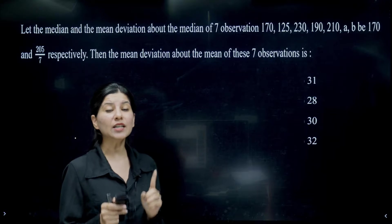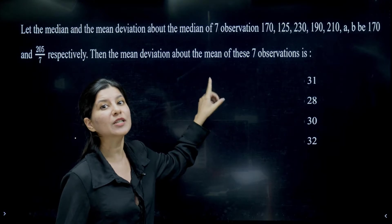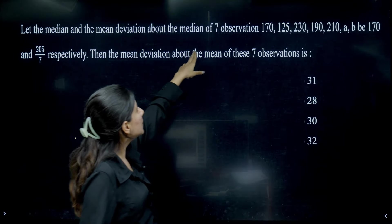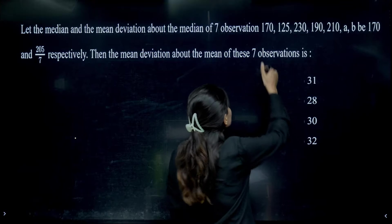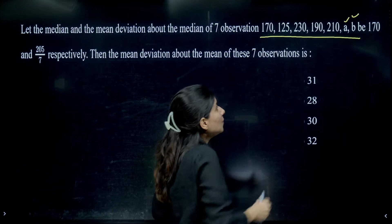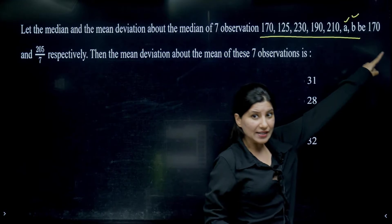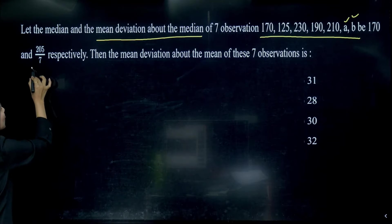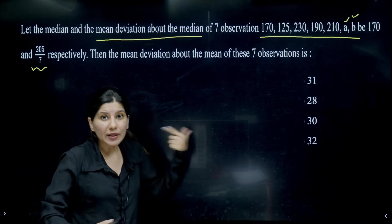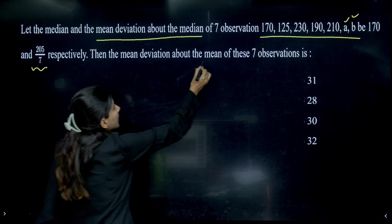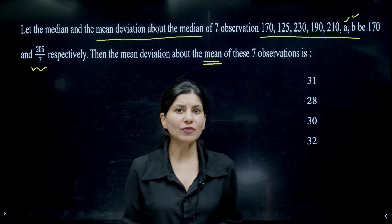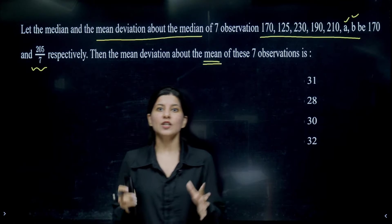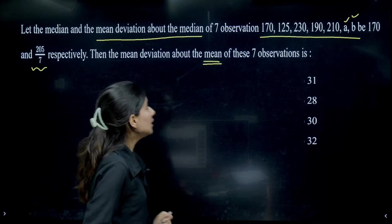Let me show you with the help of a 2024 problem. This question was asked in JEE Mains 2024, which says that the median and the mean deviation about median of these seven observations are given. These are the seven observations wherein A and B are missing. The median is given as 170 and mean deviation about the median is given as 205/7. We need to figure out the mean deviation about the mean of these seven observations.